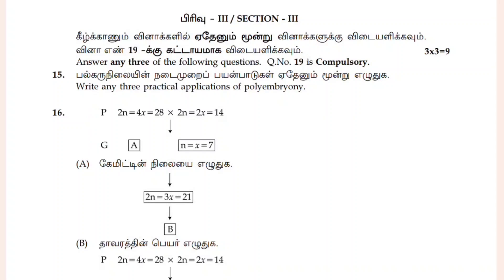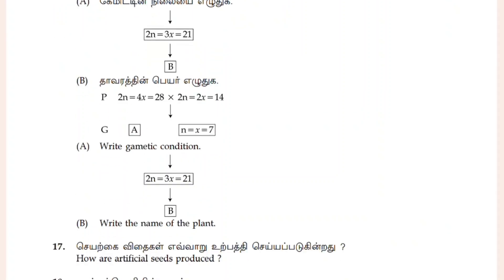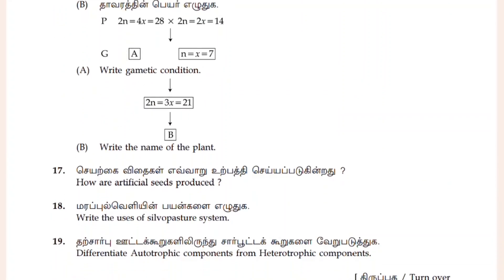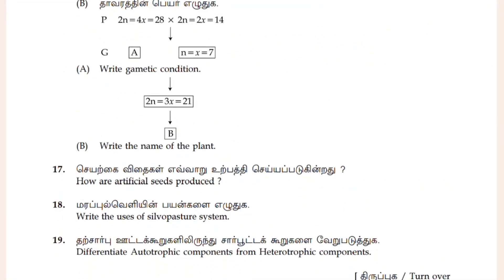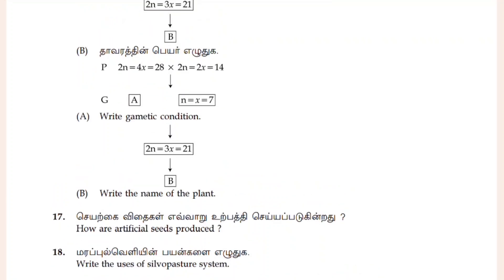Let's pick a 6-mark and pick a 3-mark. Differentiate Autotrophic Components and Heterotrophic Components. This is 10 marks. This is 3 marks.